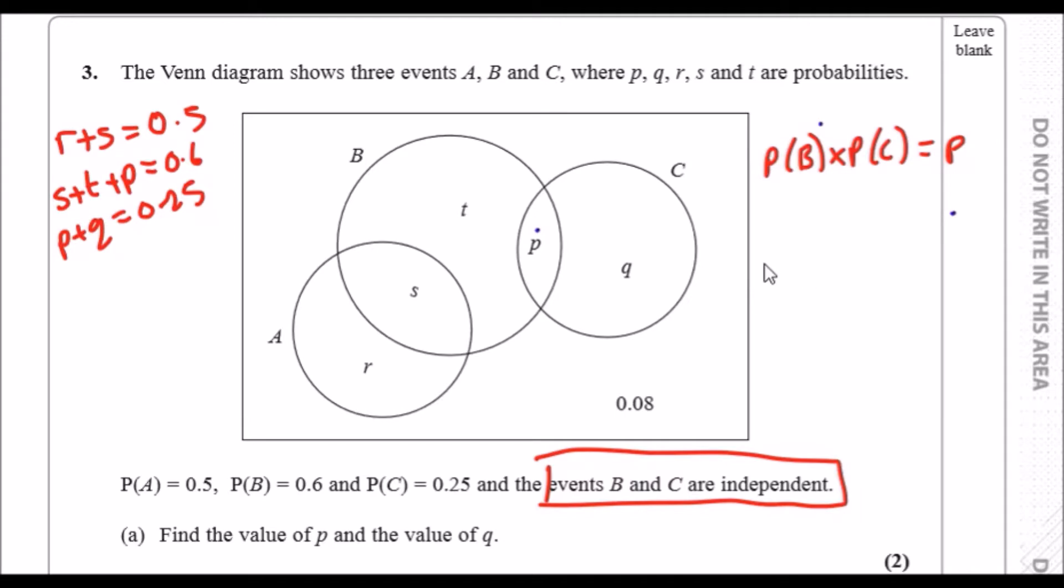Since we can already solve some things, we can see that the probability of B is 0.6 and C is 0.25. Let's smash down the calculator right now. So 0.6 times 0.25 will give you 0.15, so you can just replace p with 0.15.